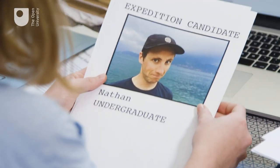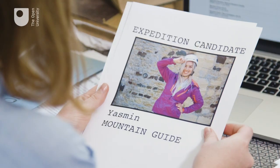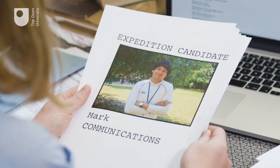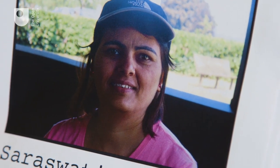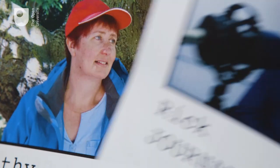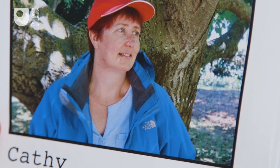Involving people should be a key part of the impact planning process. Choose people who can make a contribution or who could be affected by the research. This could involve special expertise or experience, or citizens with an interest or stake in the work. Working with others will bring new insights and help improve the quality of your research.